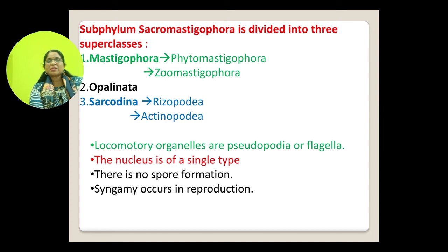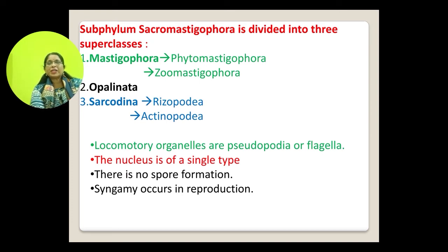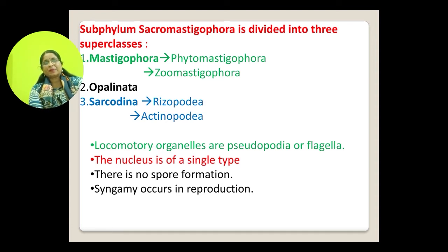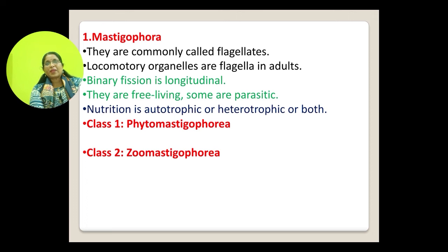The common characters of Sarcomastigophora include locomotory organelles which may be pseudopodia or flagella. The nucleus is single, there is no spore formation, and syngamy occurs in reproduction, which is a sexual method of reproduction.